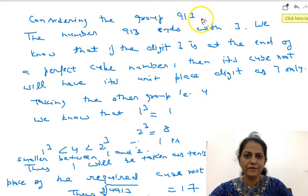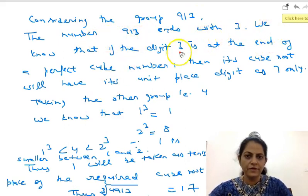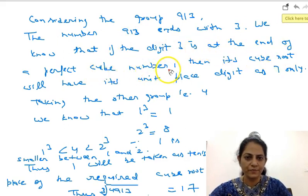Now, considering the group 913, the number 913 ends with 3. We know that if digit 3 is at the end of a perfect cube number, then its cube root will have its unit place digit as 7 only. 7 times 7 is 49 and 49 times 7 is 343.